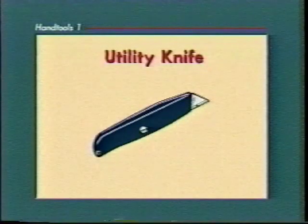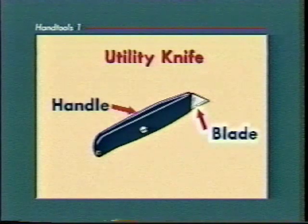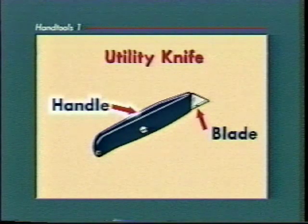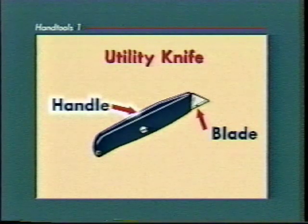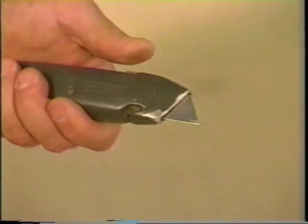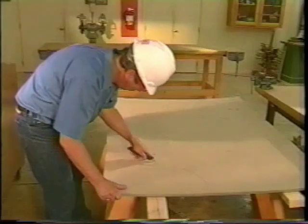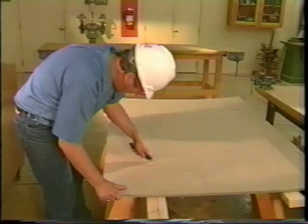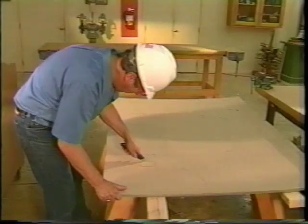The utility knife has two main parts: the blade and the handle. The handle may contain extra blades. Utility knives with retractable blades are safer. Whatever you cut with a utility knife, use these techniques.